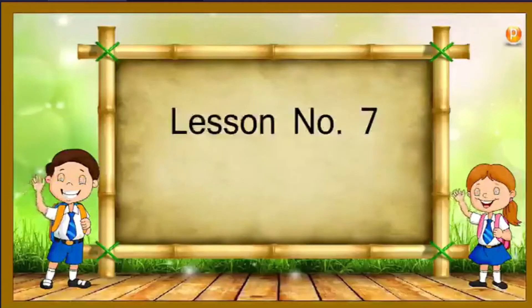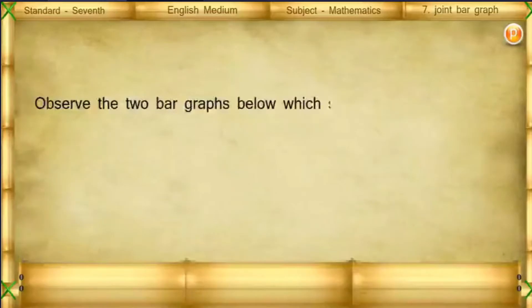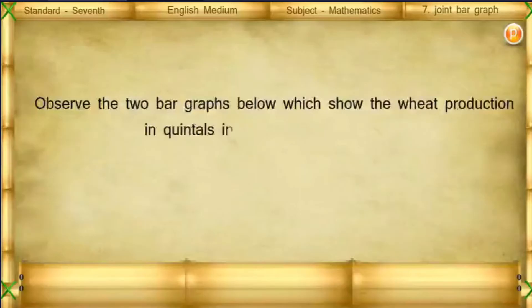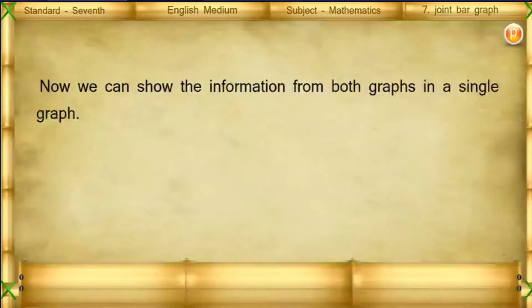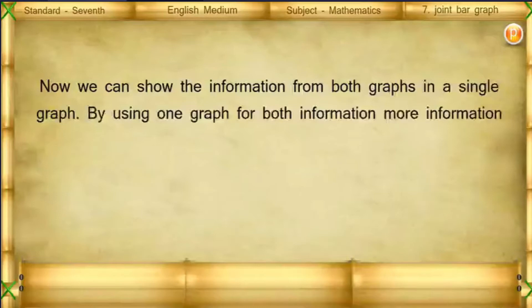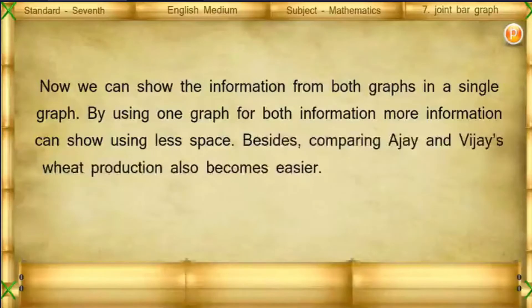Lesson number 7: Joint Bar Graph. Observe the two bar graphs below, which show the wheat production in quintals in Ajay's and Vijay's farms. This is Ajay's wheat production and this one is Vijay's wheat production. We can show the information from both graphs in a single graph, using one graph for both — more information can be shown using less space.